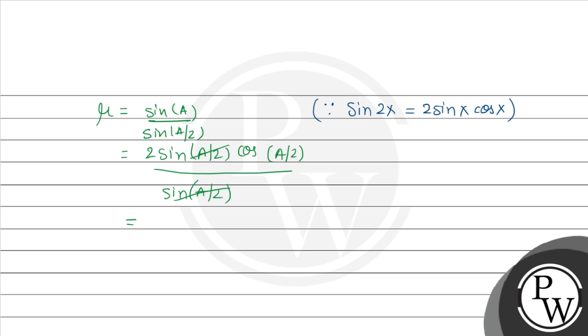Sin of A by 2 cancels, giving us 2 cos of A by 2 equals mu. If we need the value of A, then cos of A by 2 equals mu by 2, and A equals cos inverse of mu by 2, multiplied by 2. This is the value of A in terms of refractive index.